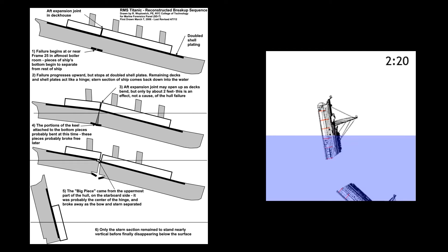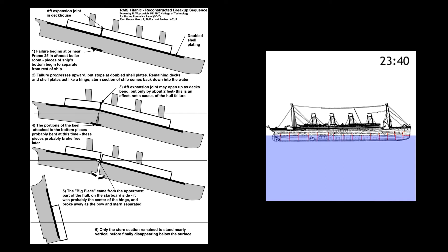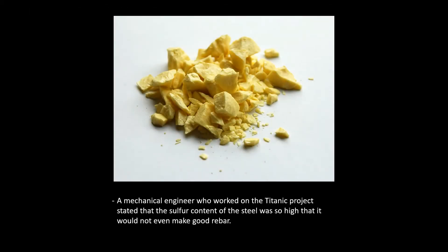However, it has been determined by researchers that the manganese sulfide particles likely had no effect on the steel's fracture. Although manganese is a significant solid-solution agent that increases toughness, it is thought that the low levels of manganese might have increased the ductile-to-brittle fracture transition temperature by as much as 10 degrees Celsius.